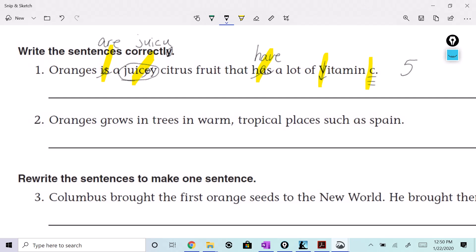Oranges grows in trees in warm, tropical places such as Spain. What do we got, Lainey, Boo-Boo? What do you think? Grows. Oranges. Grows? In trees or should be... On trees. On trees, right? In warm, tropical places such as... We need to capitalize the S in Spain.